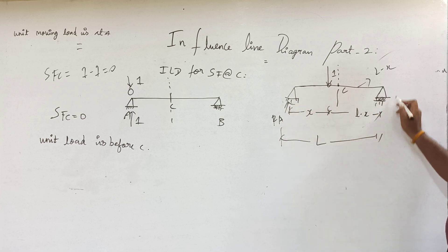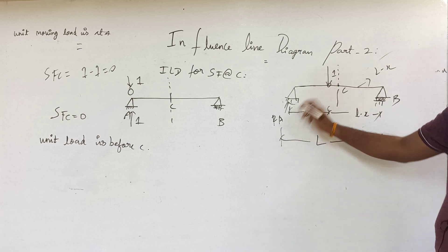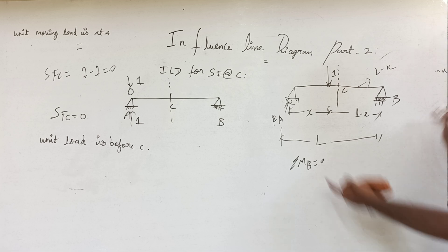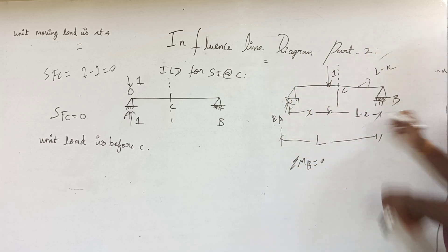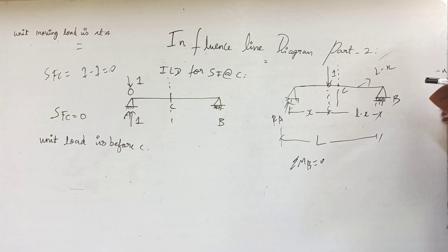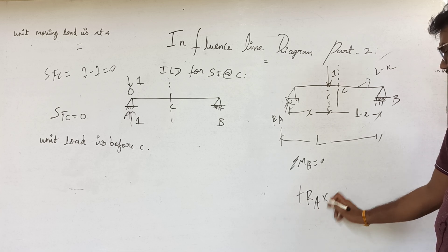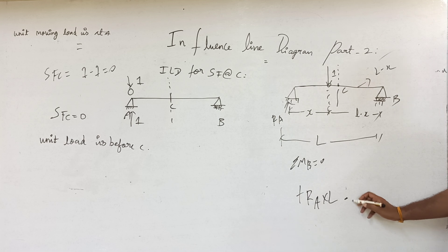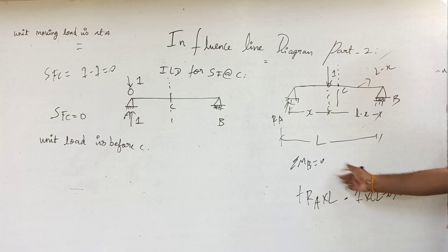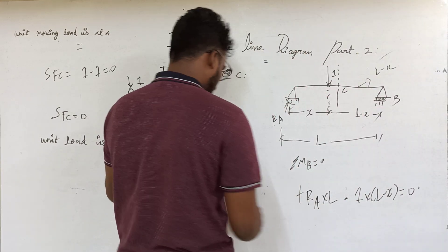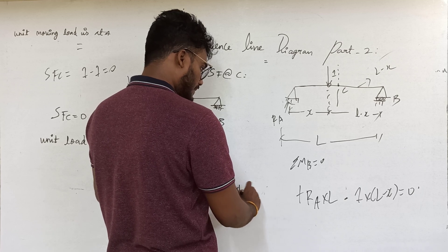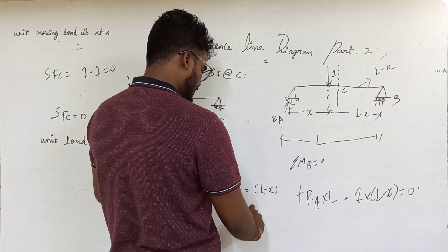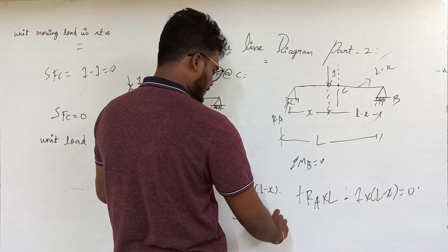Let us calculate: taking summation of moment about B equal to 0, we get RA into L minus 1 into (L minus x) equals 0. Clockwise moment gives plus RA into L minus 1 into (L minus x) equals 0. Therefore RA into L equals L minus x, which implies RA equals (L minus x) by L.